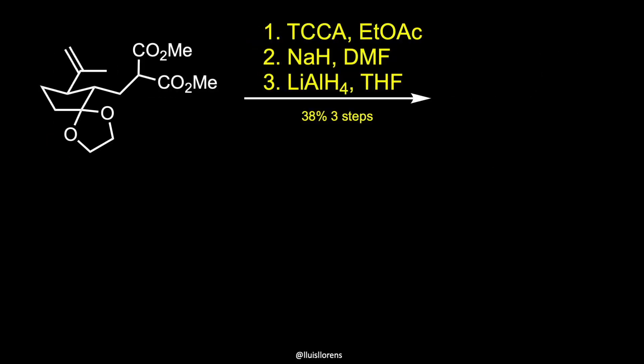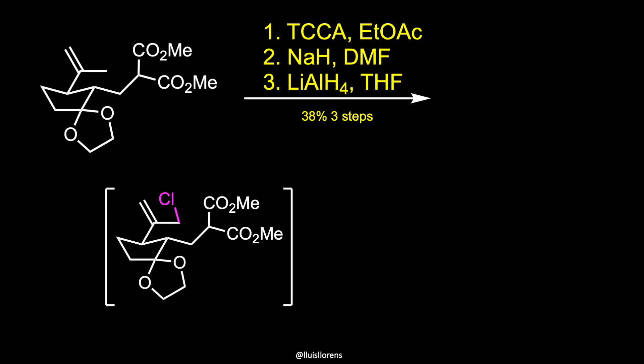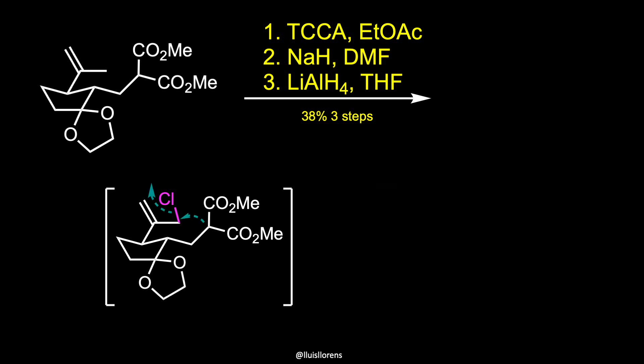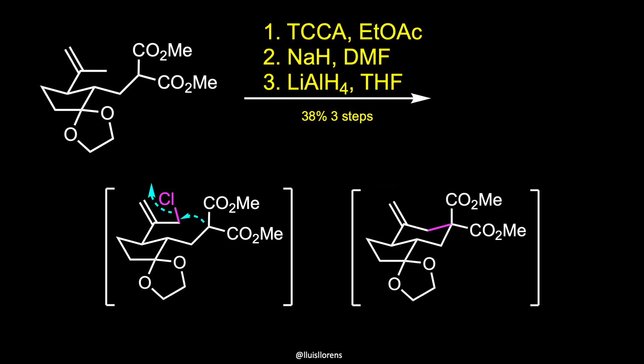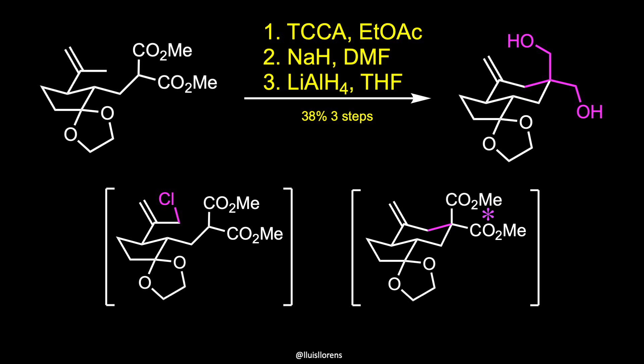To complete the hydrindane framework, the authors designed a three-step sequence that involved an allylic chlorination using trichloroisocyanuric acid, a sodium hydride-induced intramolecular cyclization, and a global reduction of both esters with lithium aluminium hydride.